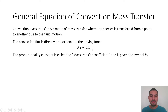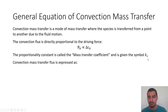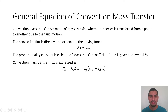The proportionality constant is called the mass transfer coefficient, which is exactly like the heat transfer coefficient in heat transfer. Its symbol is Kc. The equation takes the form Na = Kc × ΔCa, which is Kc multiplied by (CaS minus Ca∞). So this is the equation.